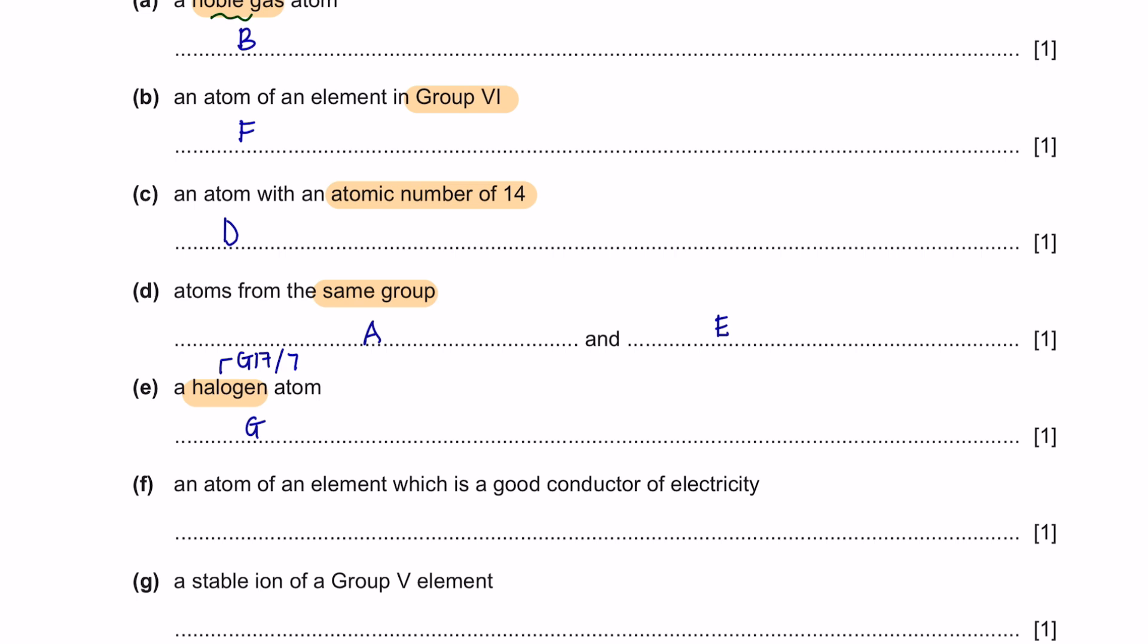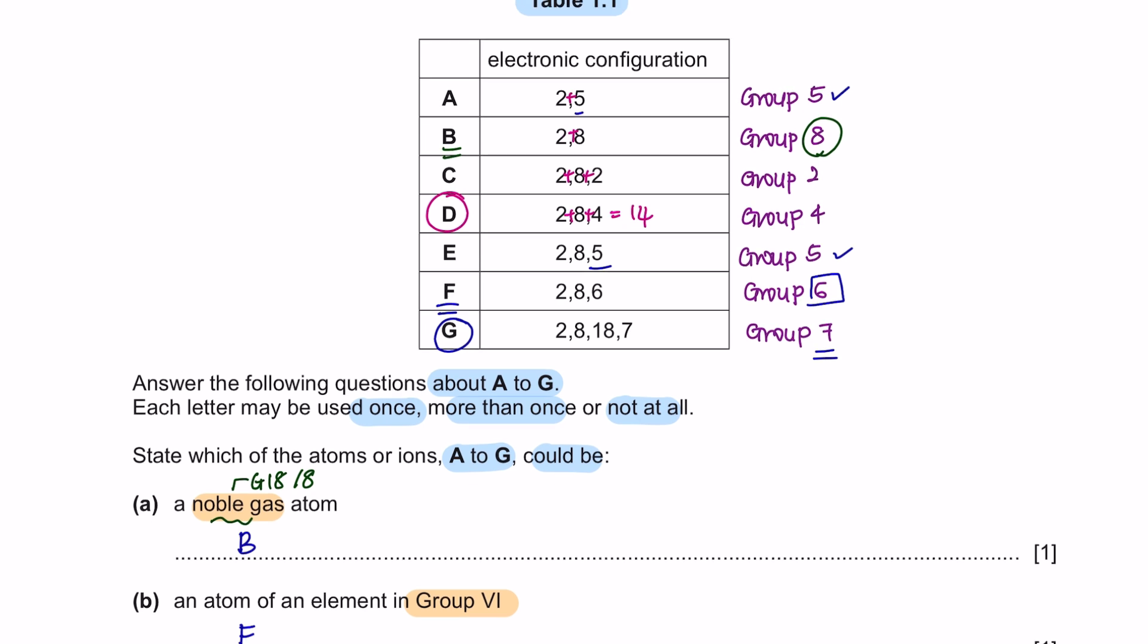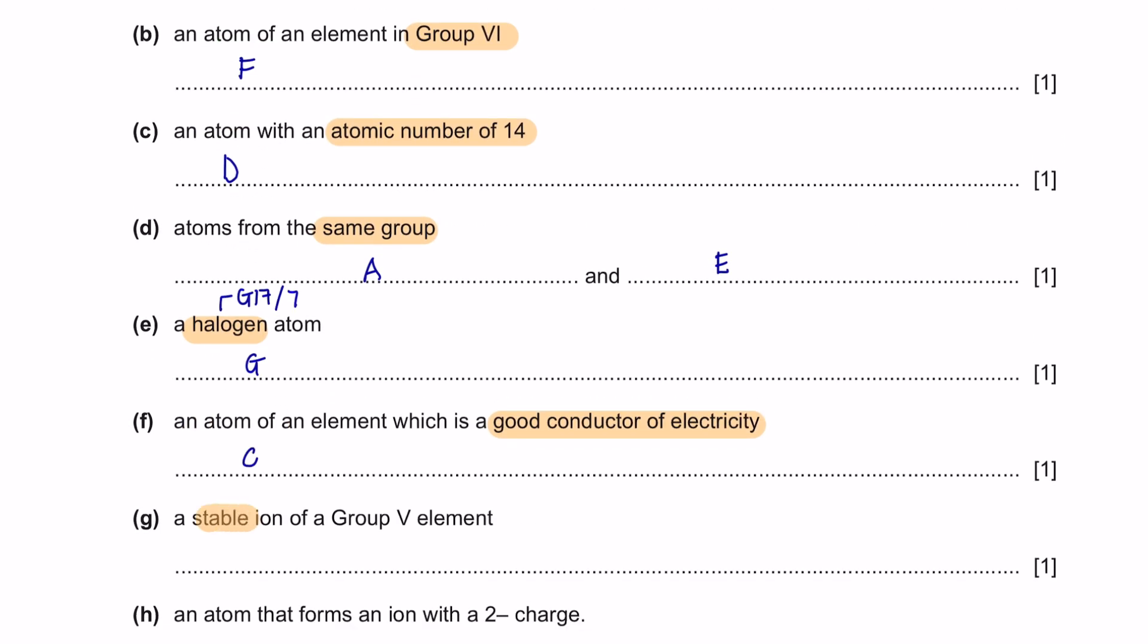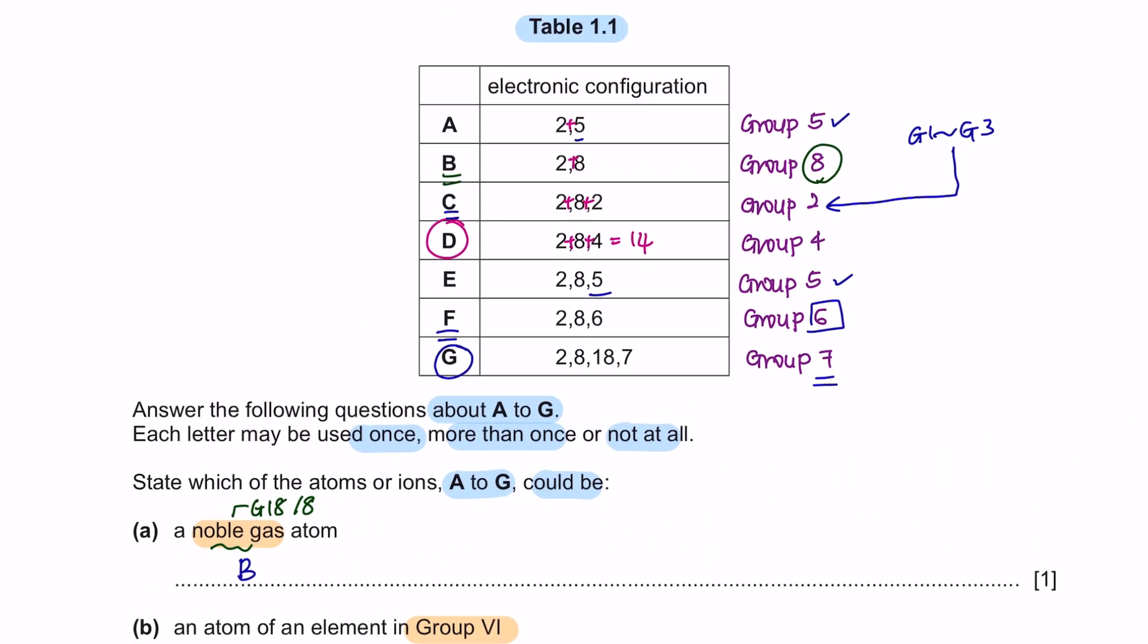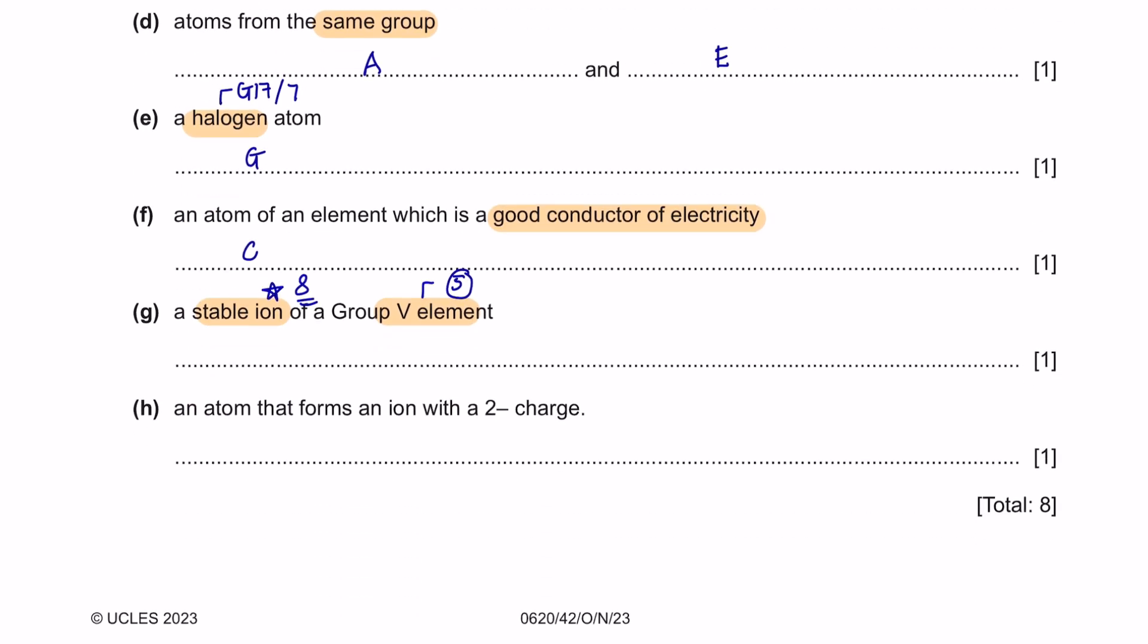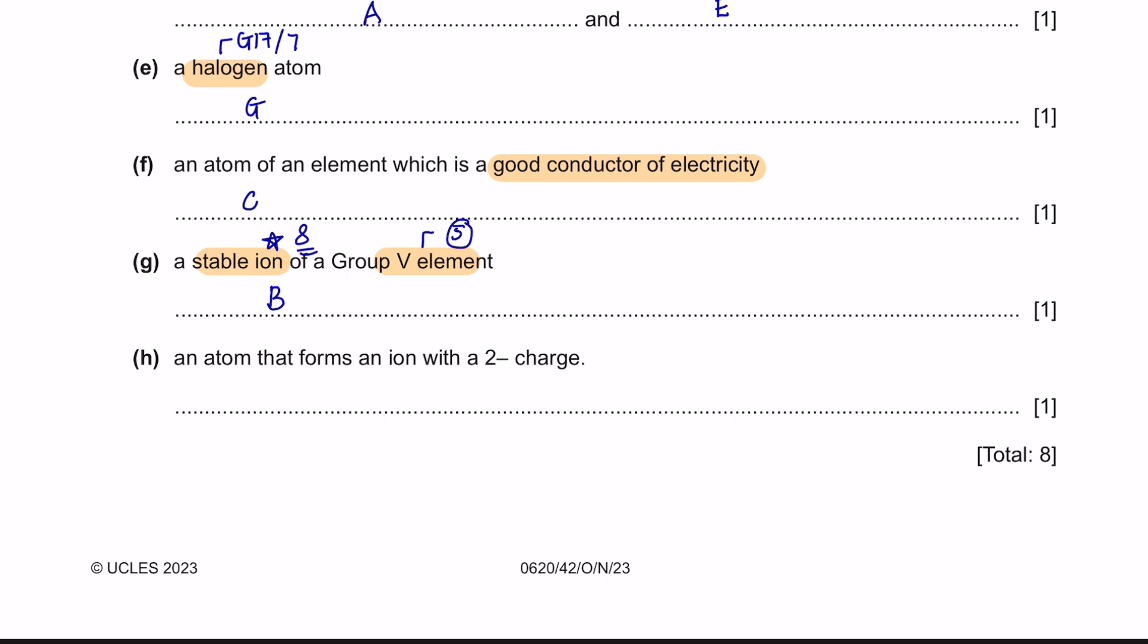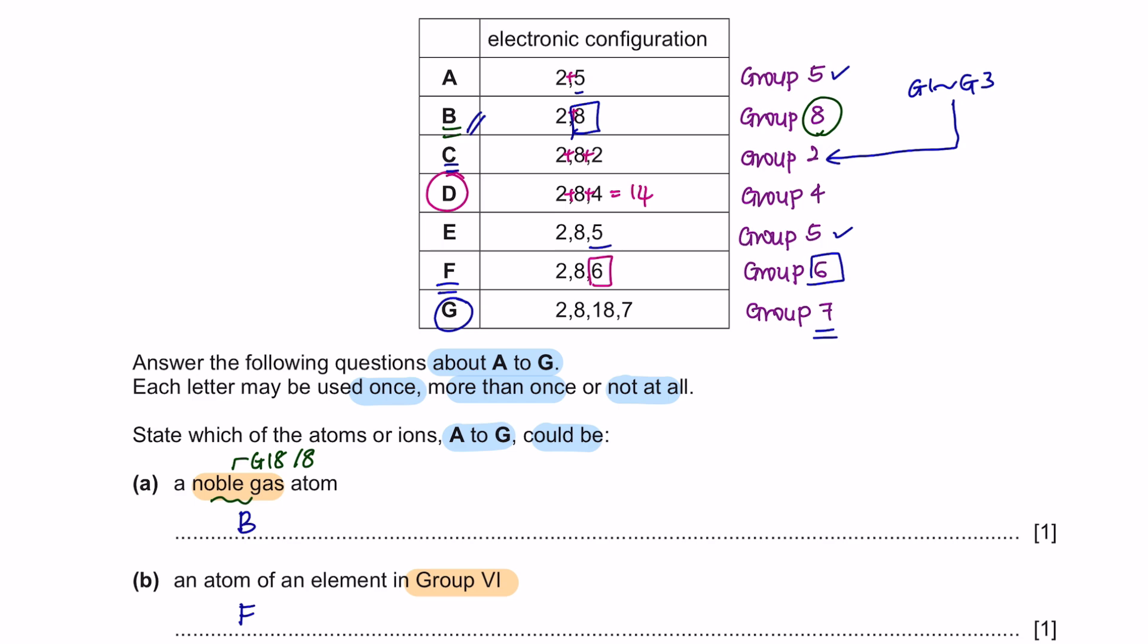Question F: an atom of an element which is a good conductor of electricity. A good conductor of electricity is from metal. Group 1 to group 3 are metals, so that will be atom C. Next, a stable ion of a group 5 element. Even though it says group 5 element, it's already been stable, meaning it has achieved an octet valence electron. We're going to look for valence electron of 8, which is B. Lastly, an atom that forms an ion with negative 2 charge. Negative 2 charge means it will gain 2 electrons to reach a stable state, so that will be a valence electron of 6, because when it gains 2 electrons, it will become 8 electrons.